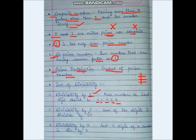Divisibility by 3: to check if a number is divisible by 3, we find the sum of all its digits and check whether that sum is divisible by 3. If the sum of digits is divisible by 3, then the number is also divisible by 3.